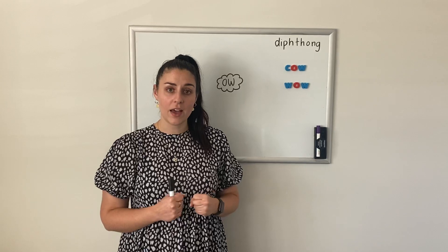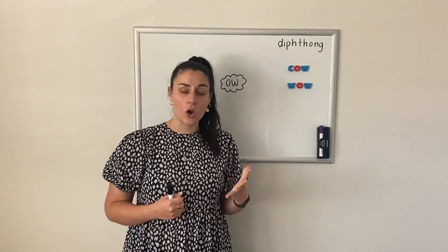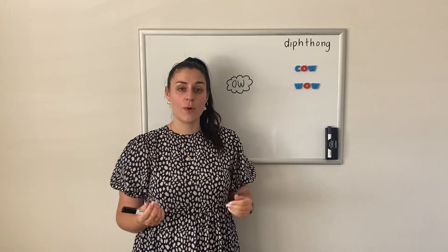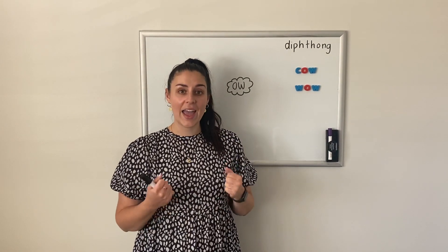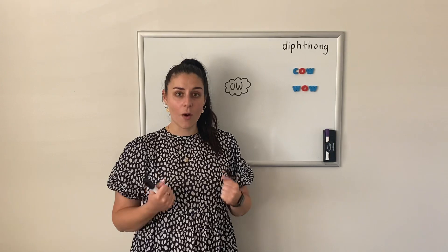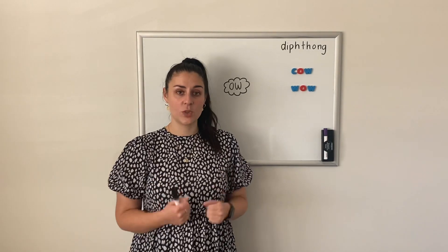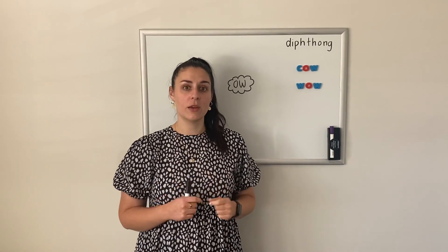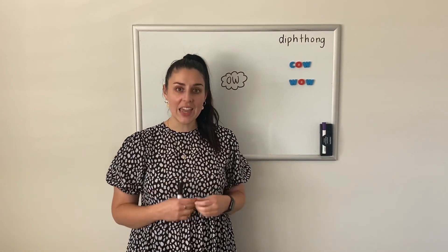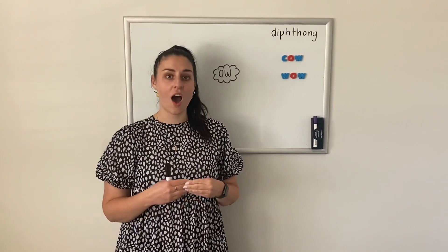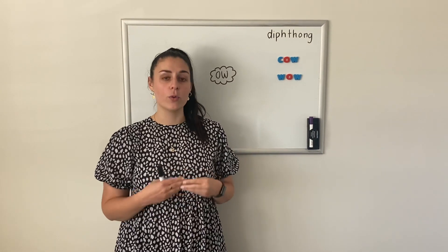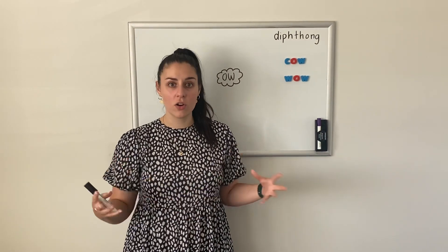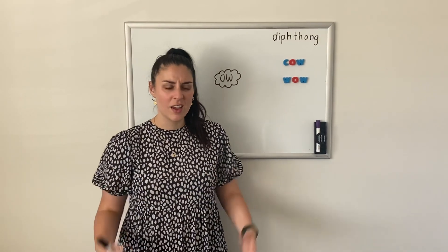So when we think about our vowels, we have our long and our short vowels. We have A, E, I, O, A, which are our short vowel sounds. And then we have A, E, I, O, U, which are our long vowel sounds.